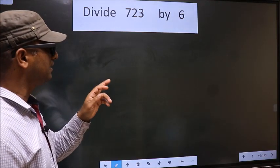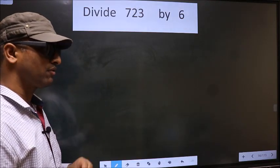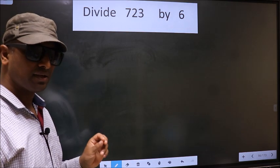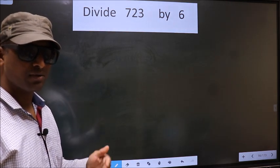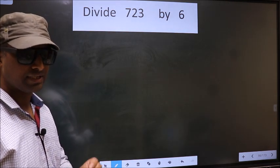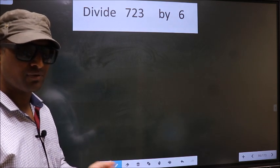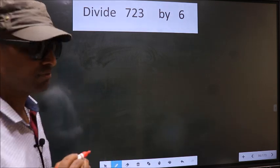Divide 723 by 6. While doing this division, many do this mistake. What is the mistake that they do? I will let you know. But before that, we should frame it in this way.